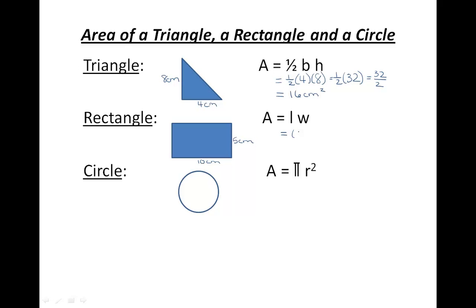Area equals length, 10, times the width, 5. Enter these numbers into your calculator, 10 times 5. Your final answer will be 50 centimeters squared.